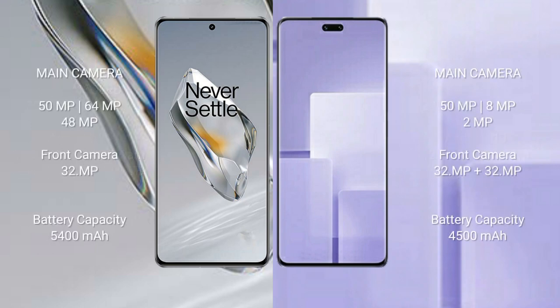OnePlus 12 features a triple rear camera setup: 50MP plus 64MP plus 48MP, and a 32MP front camera. Xiaomi CV3 features a triple rear camera setup: 50MP plus 8MP plus 2MP, and a 12.1MP plus 32MP dual front camera.